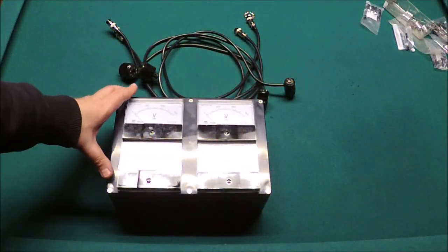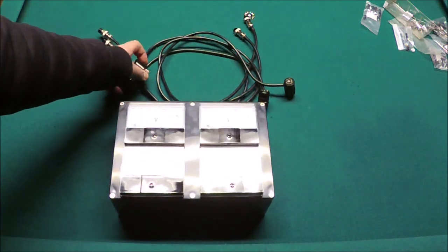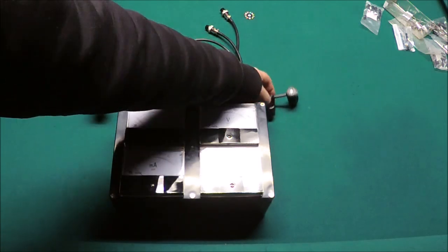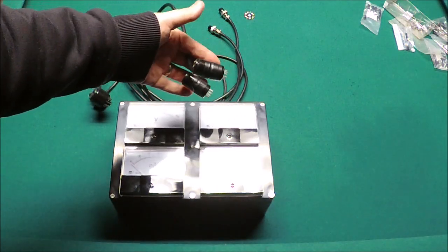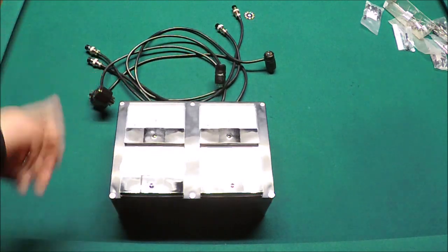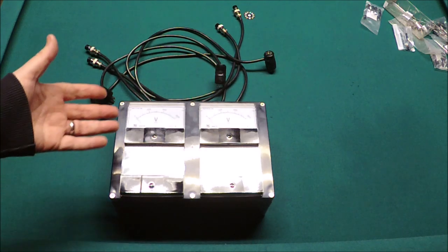Okay, so the deluxe Bias Boss is our meter box there. Then we get the pair of octoprobes and the pair of 9-pin probes. Everything you need to bias up any guitar amplifier I can think of within reason, and quite a few hi-fi amps too.